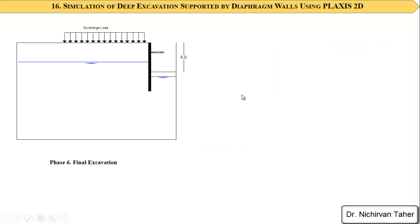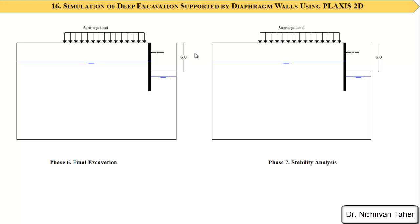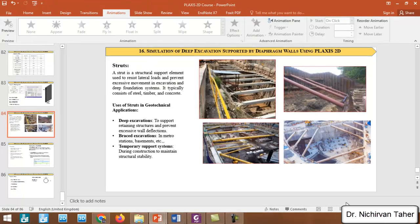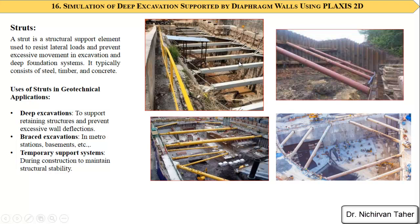After that we will have the final excavation, excavating another 3 meters to reach 6 meters total. This is the final construction phase in Plaxis 2D. In the last phase, similar to phase 6, we will apply a stability analysis and calculate the safety factor for this example.